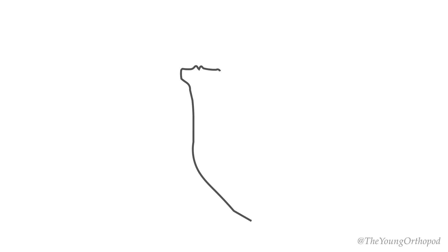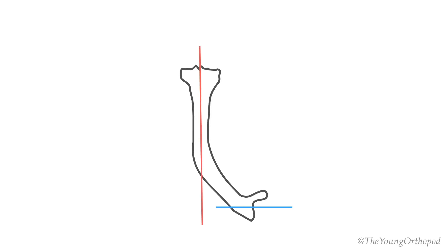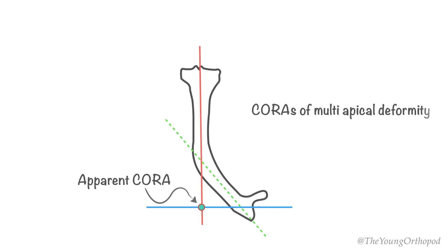If the CORA lies outside the point of obvious deformity, either a second CORA exists in that plane — meaning the deformity is multiapical — or a translational deformity exists in that plane. This kind of deformity would need multiple osteotomies.